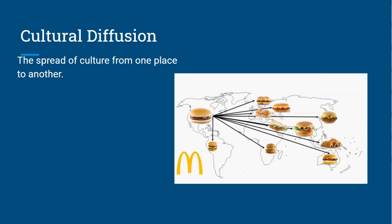Speaking of which, cultural diffusion is the spread of culture from one place to another — and it goes hand in hand with the Silk Road. Culture was diffused throughout Asia thanks to the Silk Road; Indian culture mixed with Chinese culture, which then mixed with European culture.